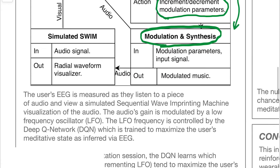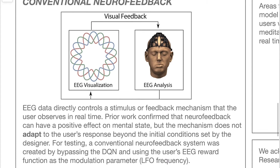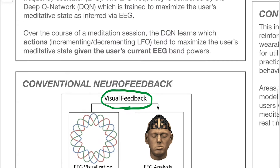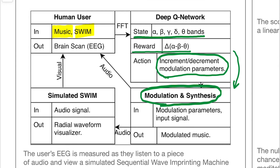To provide background on the status quo system: neurofeedback is when the user's EEG data is directly observed by the user. Past studies have shown that this can have a positive effect on mental state, and it's even been commercialized by Interaxon in their Muse Meditation app. To test our system, we created a conventional neurofeedback system by removing the reinforcement learning component. The user's meditative state, as inferred by EEG, was used as the low frequency oscillator frequency parameter to directly show the user their meditation state.